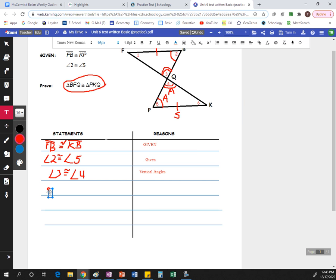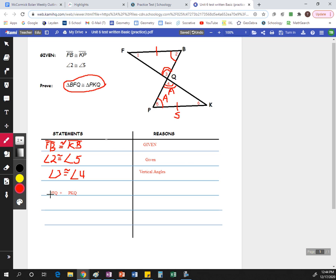So down here, you can say triangle BFQ is congruent to triangle PKQ. And here, I'm typing it, but then going back and writing the symbols. That should be congruent. I made it a plus. And I made the triangle symbols for each of these.